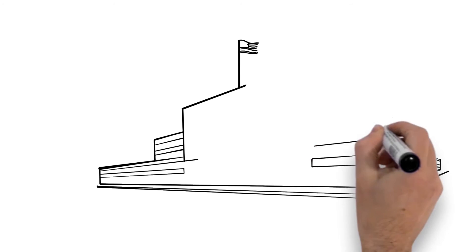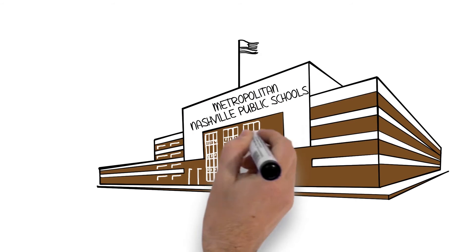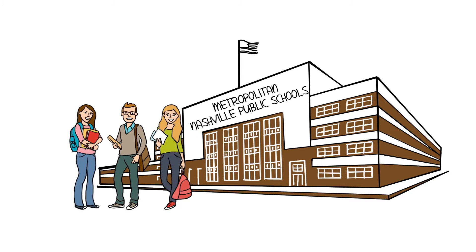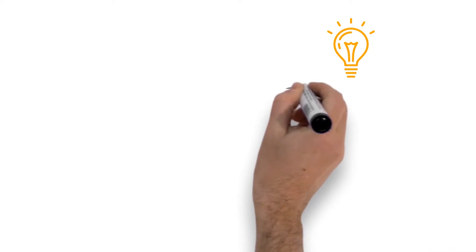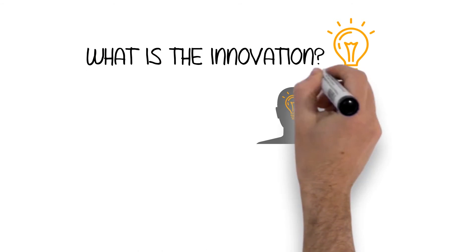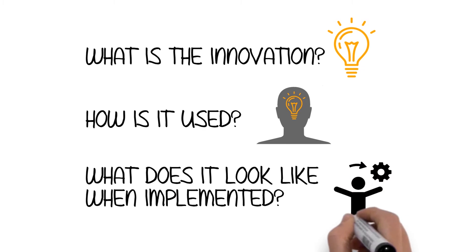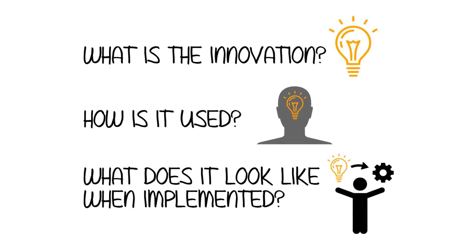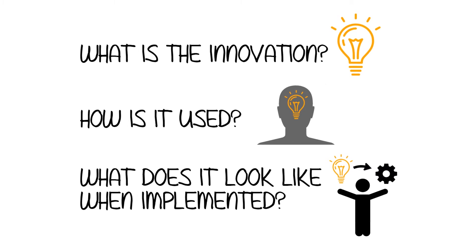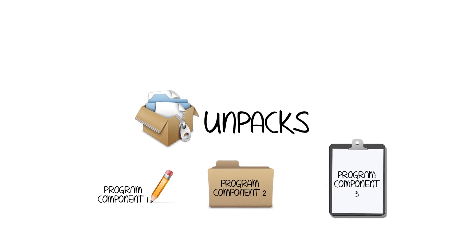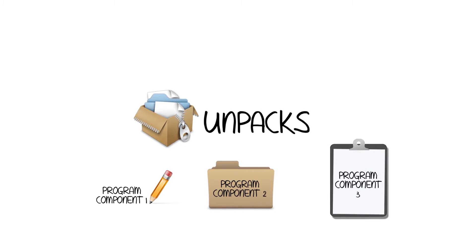To accomplish this goal, REL Appalachia partnered with Metropolitan Nashville public schools to improve collaborative data use using an Innovation Configuration Map. An IC map answers questions about an innovation such as: What is it? How is it used? What does it look like when it's implemented? It provides a clear picture of the behavioral expectations when implementing a new process or program, and describes the major components of a program through clear and specific instructions that will lead to intended outcomes and measured success.